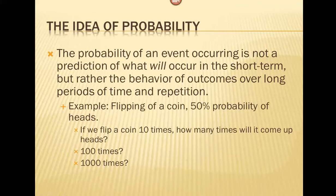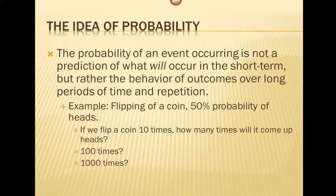When we talk about the probability of an event occurring, the idea of probability is not to predict what will happen, but what might happen. For example, if we're flipping a coin, the probability of getting heads is 50%. But if we flip a coin 10 times, it could come up heads 6 times, 8 times, or even all 10 times. The probability of 50% does not mean that if I flip a coin 10 times it will come up heads exactly 5 times — in fact, it probably won't.